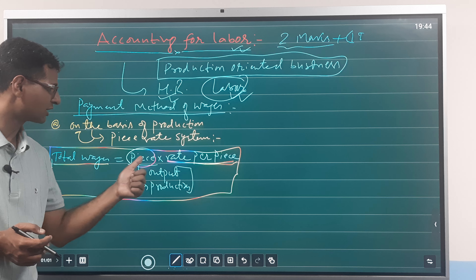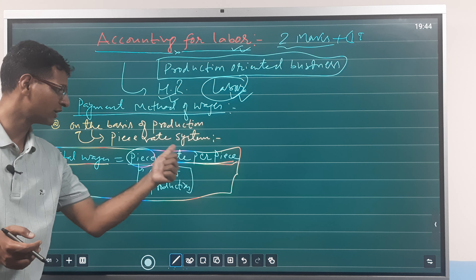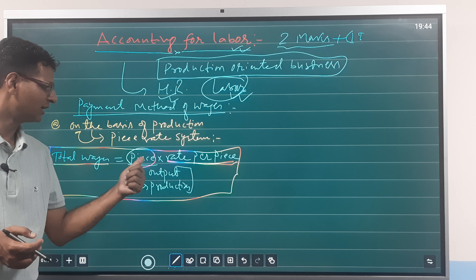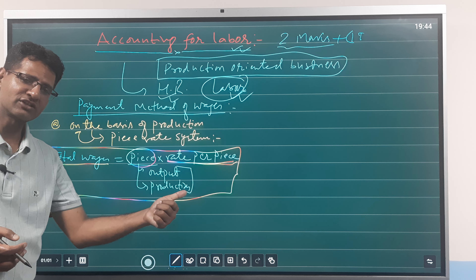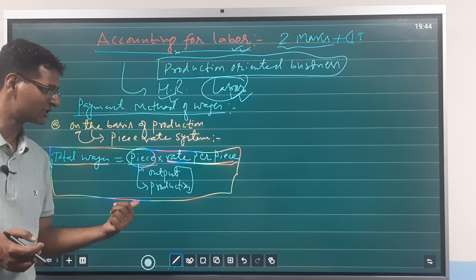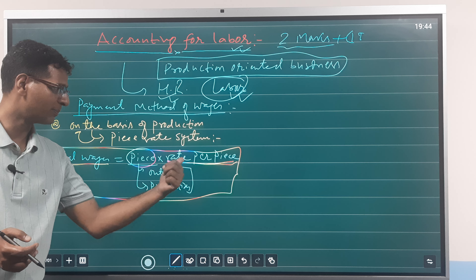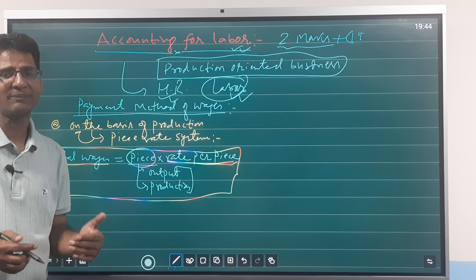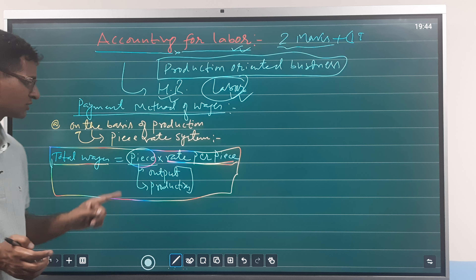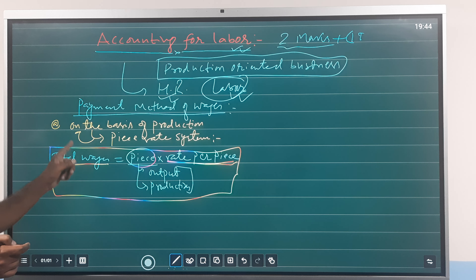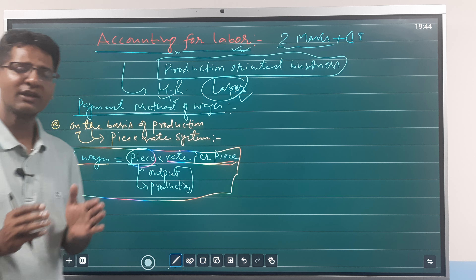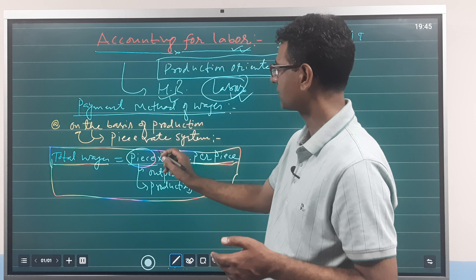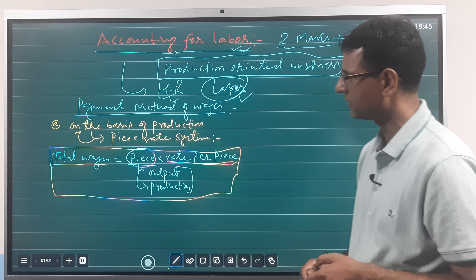Rate per piece is very important here. We need to calculate the rate per unit. The formula for the piece rate system is: Production (pieces) × Rate per piece = Total wages. This is the piece rate system calculation.